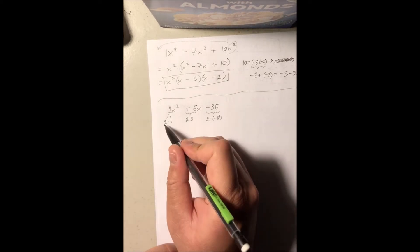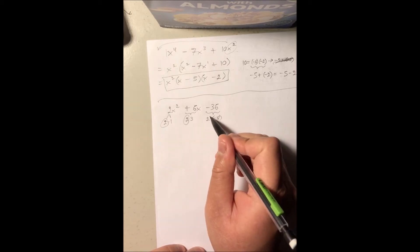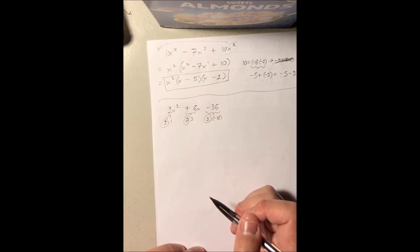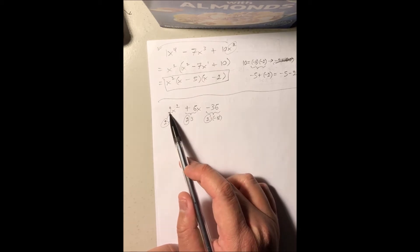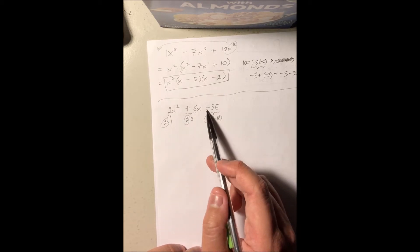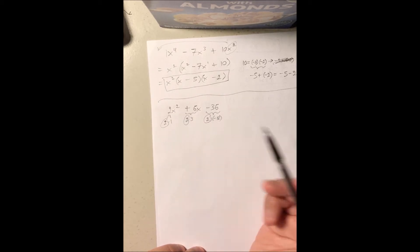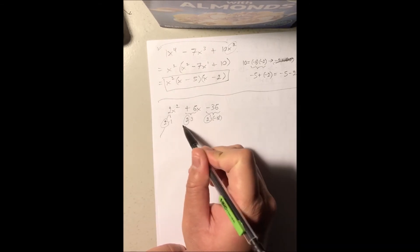The largest common factor that goes into coefficient 2, coefficient 6, and the constant negative 36 - factor it out.